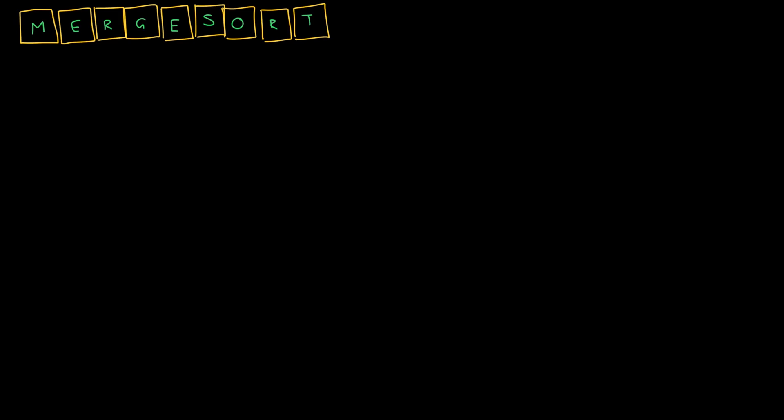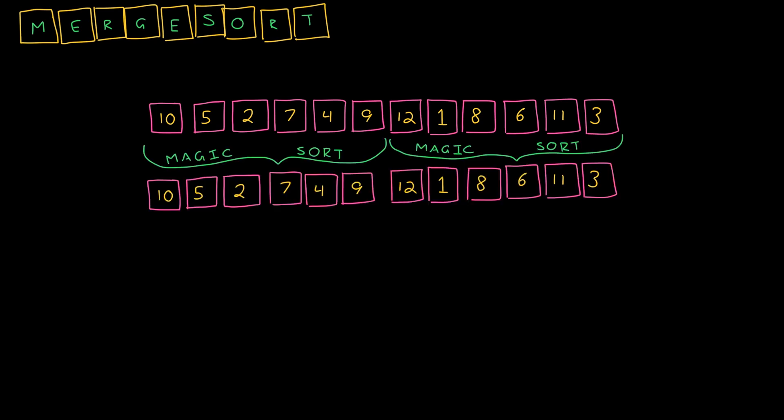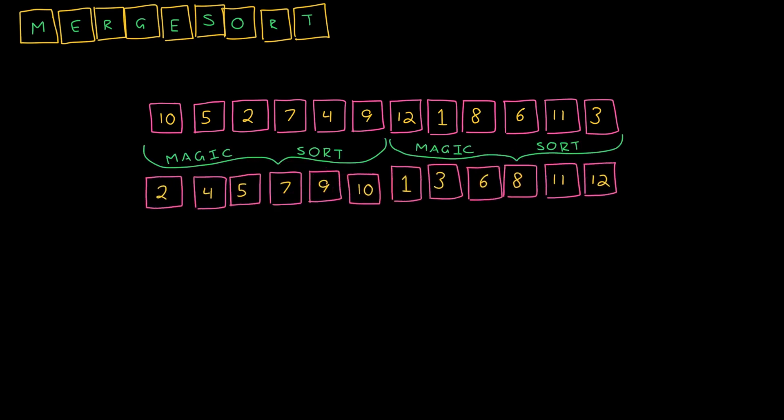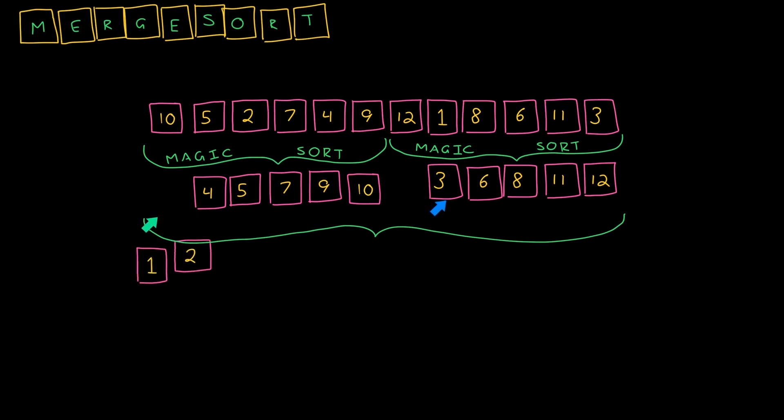Merge sort is a pretty efficient sorting algorithm, and the best way to conceptualize merge sort is recursively. Suppose we had this large array and we wanted to sort it. What if we could magically sort the left half and sort the right half, and get back two sorted halves? Then if we wanted to make the whole array sorted, all we have to do is merge those in sorted order. And that's what merge sort is.